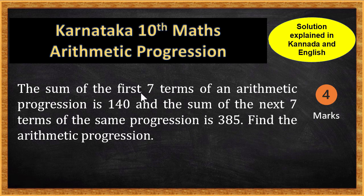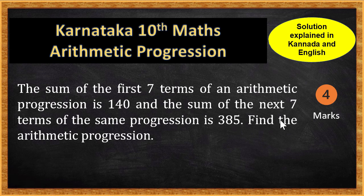They have said that the first 7 terms is 140. The next 7 terms — the eighth, ninth, tenth, eleventh, twelfth, thirteenth and fourteenth term — their sum is 385. We are supposed to find the arithmetic progression. It is a very interesting problem. It has both arithmetic progression and pair of linear equations combined into one. We will try and solve this in this video.